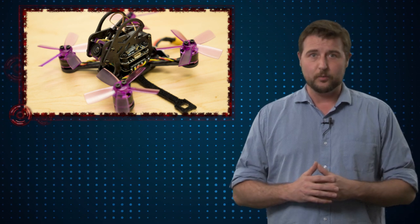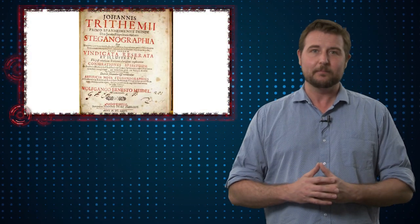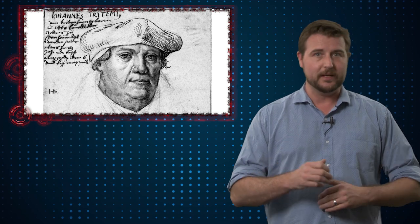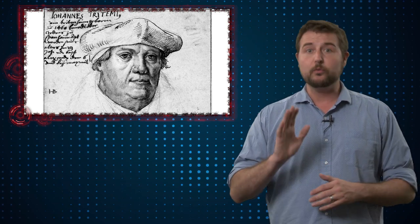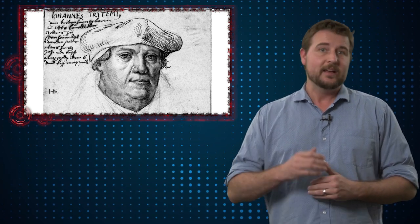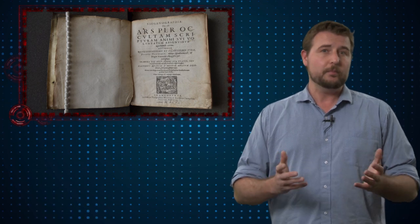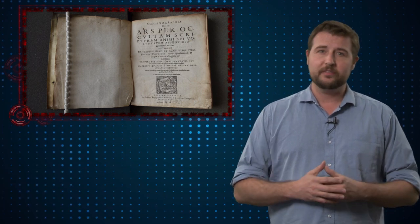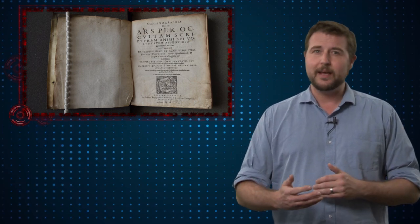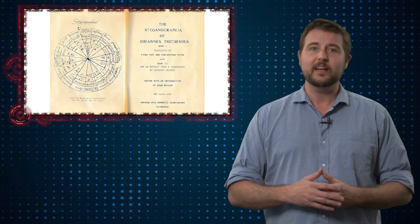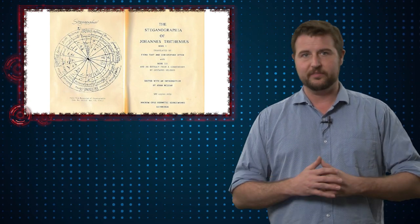The first recorded use of this term was way back in 1499 by a German abbot named Johannes Trithemius, who wrote three books, one of which had the name Steganographia. These three books on the surface appeared to be about magic, but really, hidden within the books was content about cryptography and steganography.